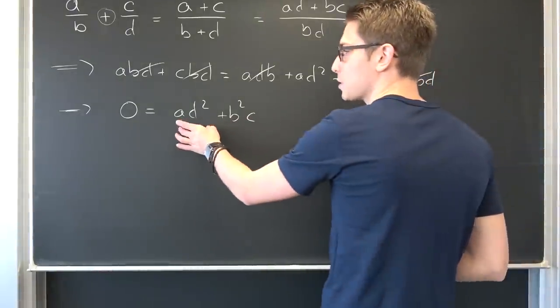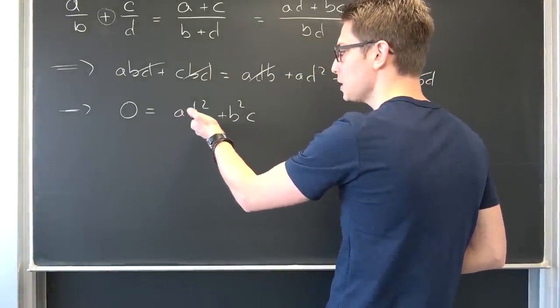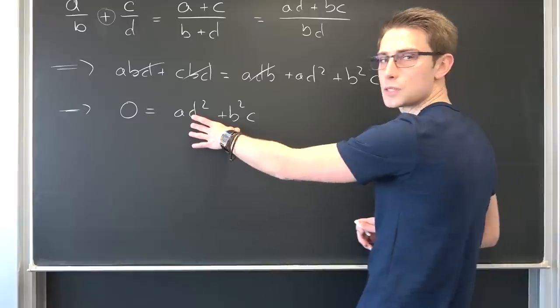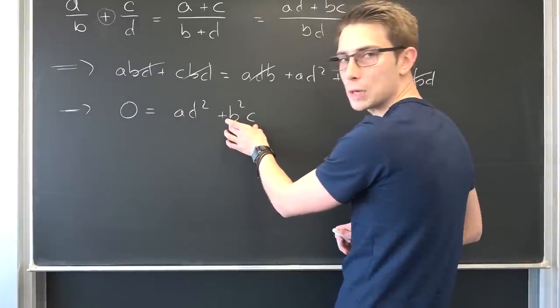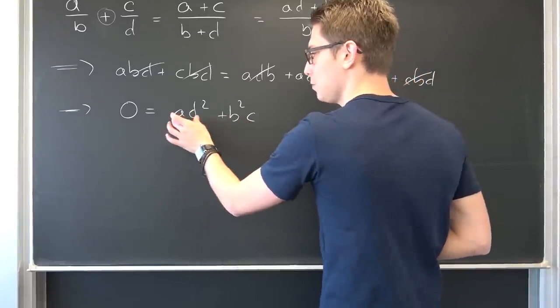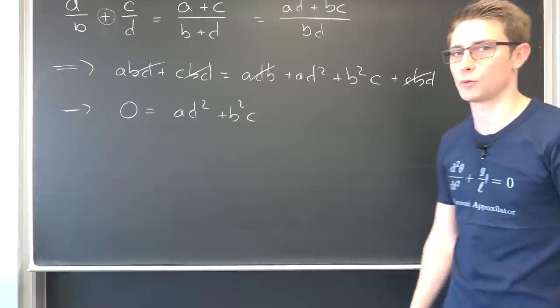Now let us talk about the natural numbers, positive integers without zero. Obviously there's not going to be any solution to this because we would need b squared c for example to be the additive inverse of this thing. Doesn't work in the positive integers without zero.